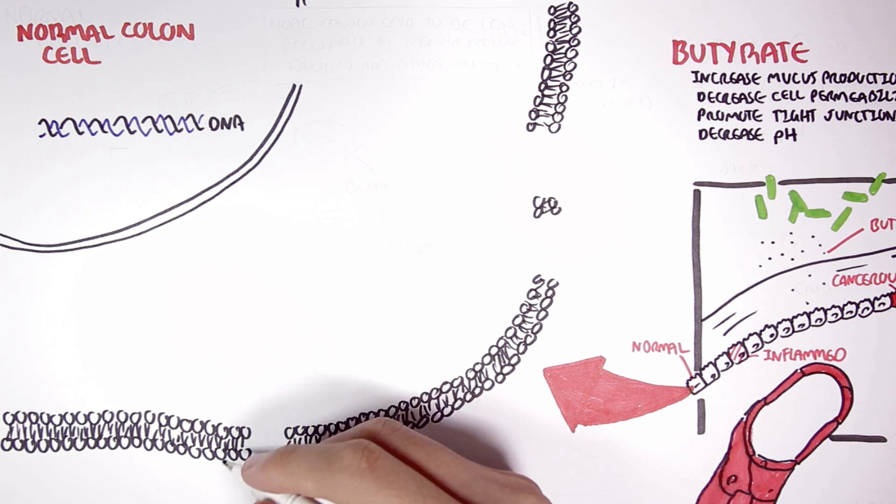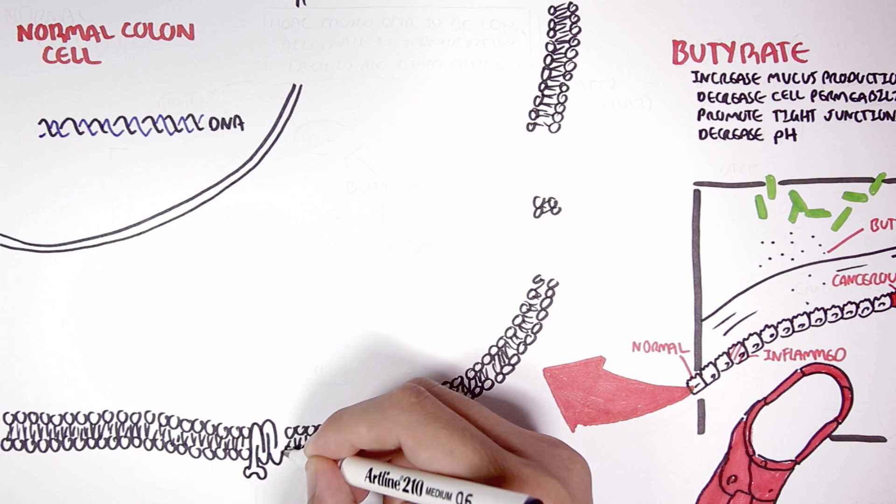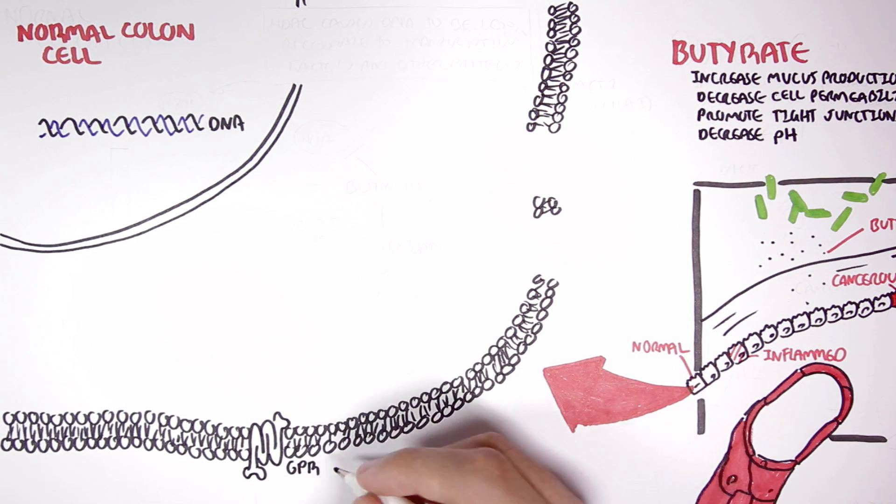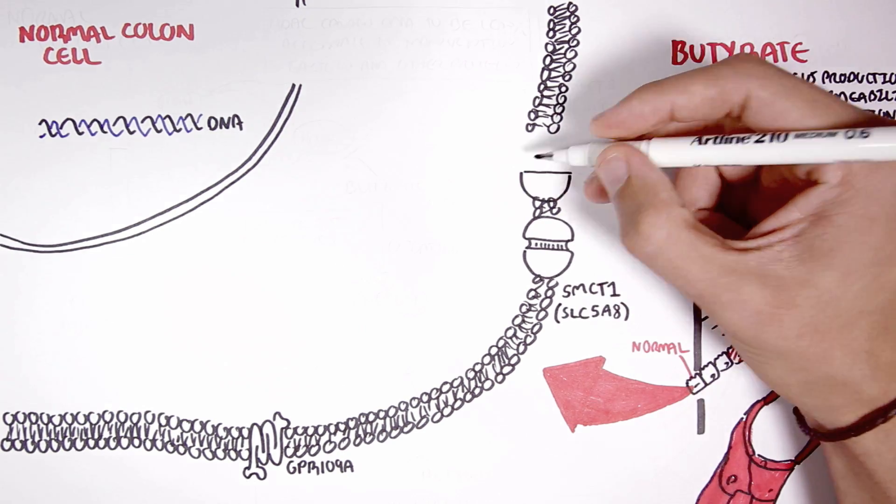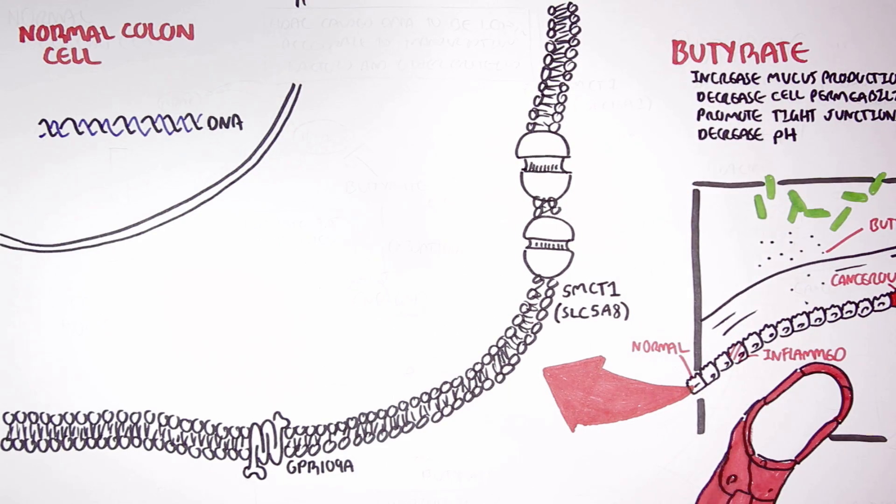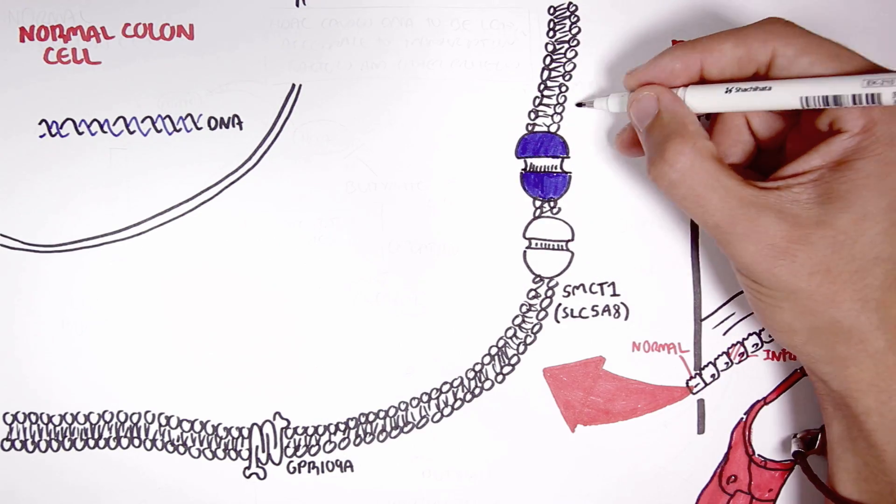Butyrate elicits its effects through the G protein receptor 109A and G protein receptor 41 and 43, which I have not drawn, and can be transported inside the cell through the monocarboxylate transporter 1, MCT1, and the sodium monocarboxylate transporter 1.